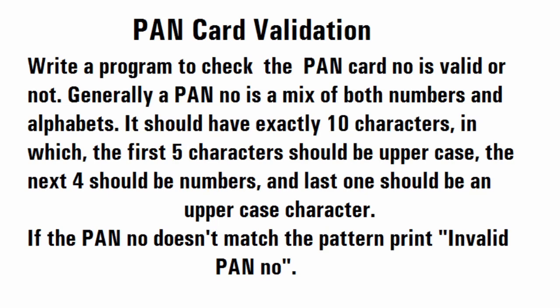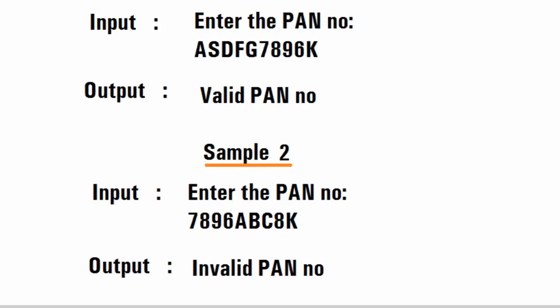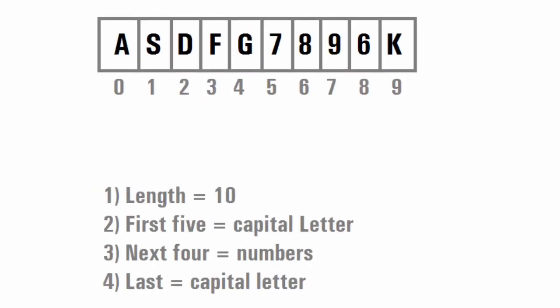As you can see in sample input 1, we have a PAN card number with exactly 10 characters where the starting five characters are uppercase and the next four are numbers — so in this case we display 'valid pan number'. In sample input 2 it doesn't match the required condition, so we display 'invalid pan number'. Now let's see the logic to solve this problem.